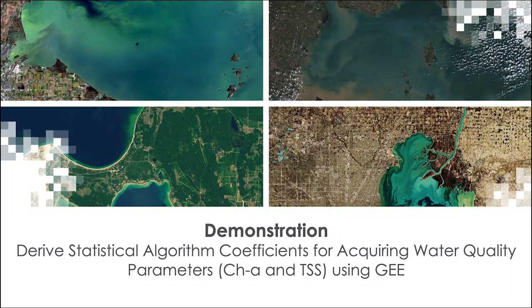With that, Sean McCartney will show how to derive statistical algorithm coefficients for acquiring water quality parameters. Considering the time available, we will focus on chlorophyll-A and TSS, though we'll also discuss Secchi depth for water clarity using a similar methodology with different spectral bands. I'll hand it over to Sean, who will start the Google Earth Engine demo, and you will also have time to explore the scripts and work with the data.